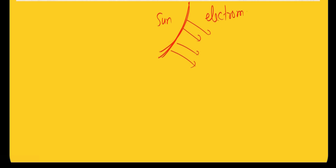Electromagnetic radiation does not require any medium. There are three modes of heat movement: conduction, convection, and radiation. Radiation does not require any medium to move when it is coming towards the Earth's surface.